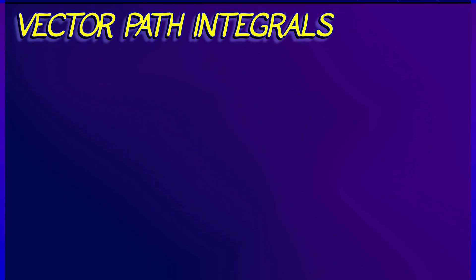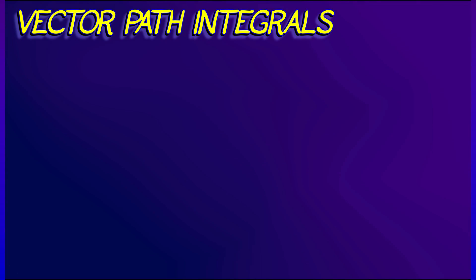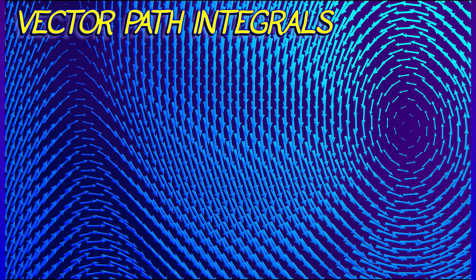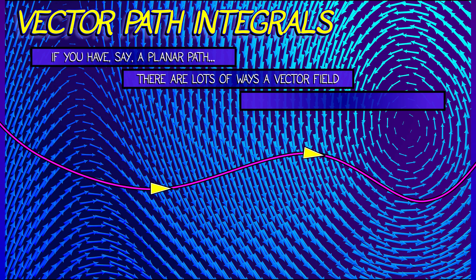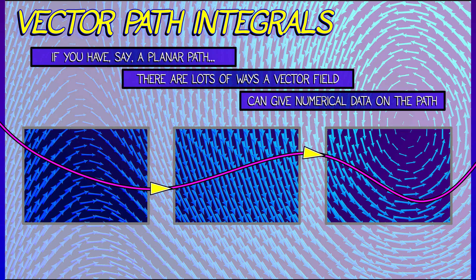With a vector path integral, there's some underlying vector field in the background. If you have a path moving through that vector field, there are a number of ways that one can assign numerical data to the path.